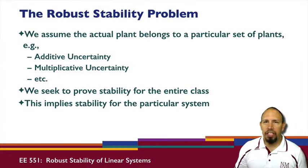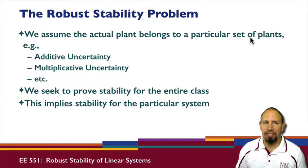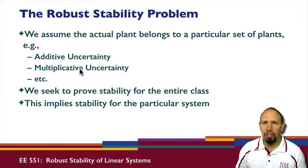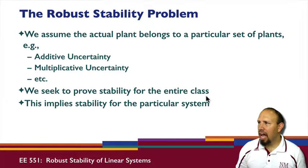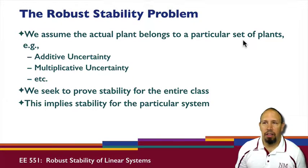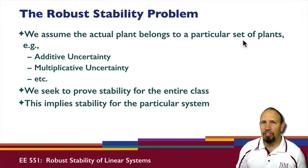In the robust stability problem, we assume that the actual plant belongs to a particular set of plants — for example, a set with additive uncertainty or a set with multiplicative uncertainty. We'll seek to prove stability for the entire class of systems, and this will imply stability for the particular system. The reason we look at it in terms of an entire class or set is because uncertainty means we don't know exactly what our system uncertainty is, so we need to actually solve the stability problem for an entire class or set of plants.